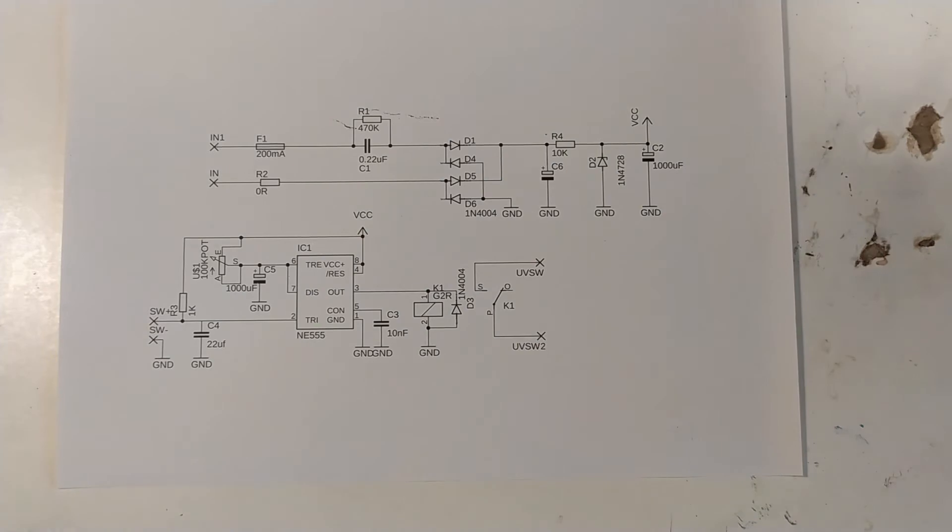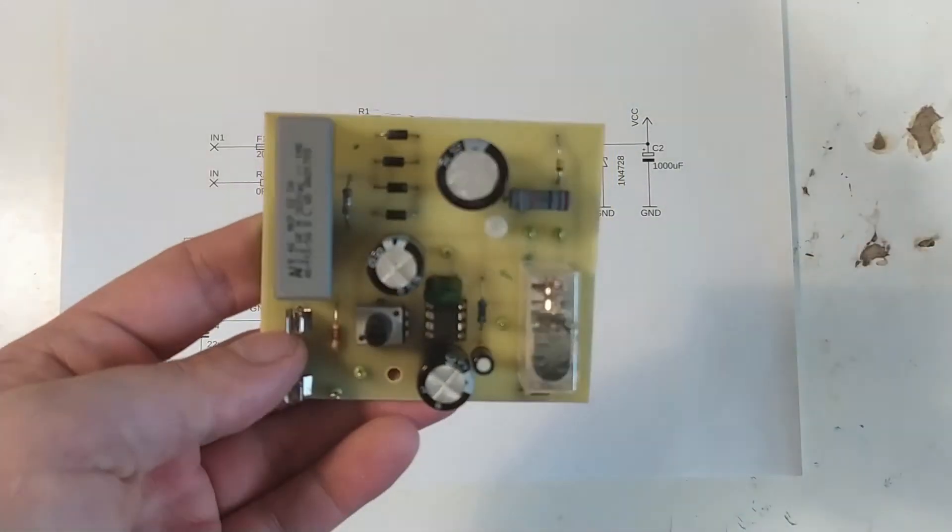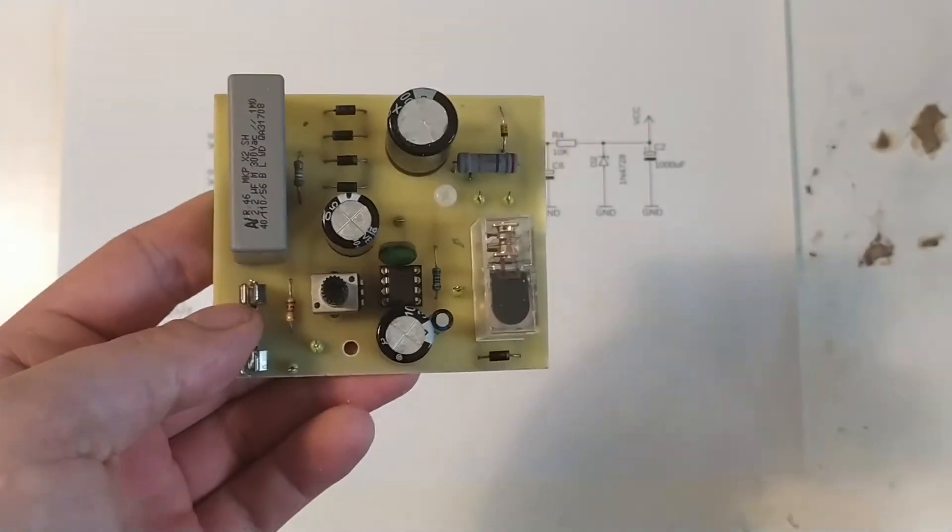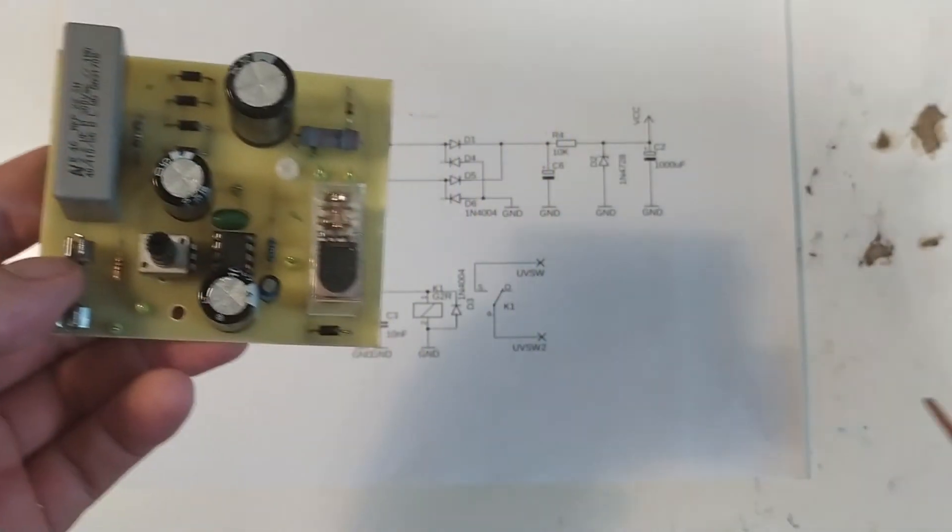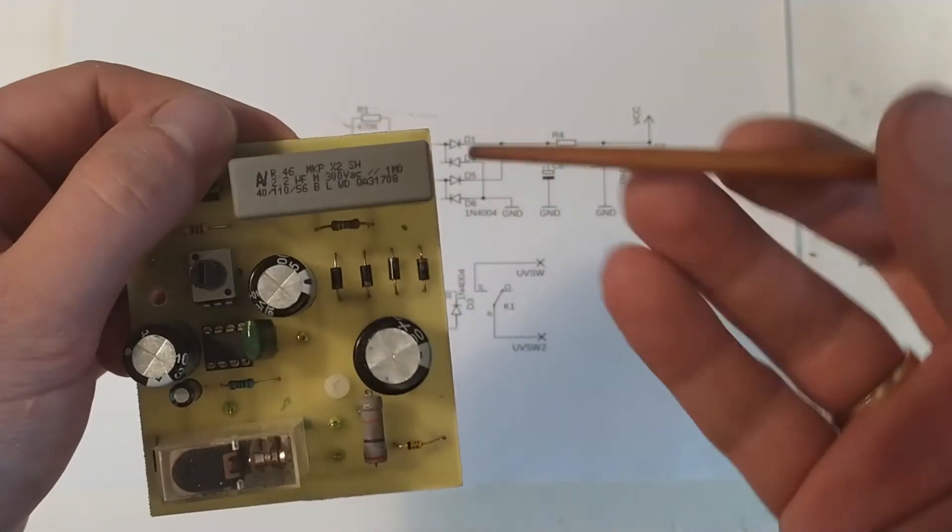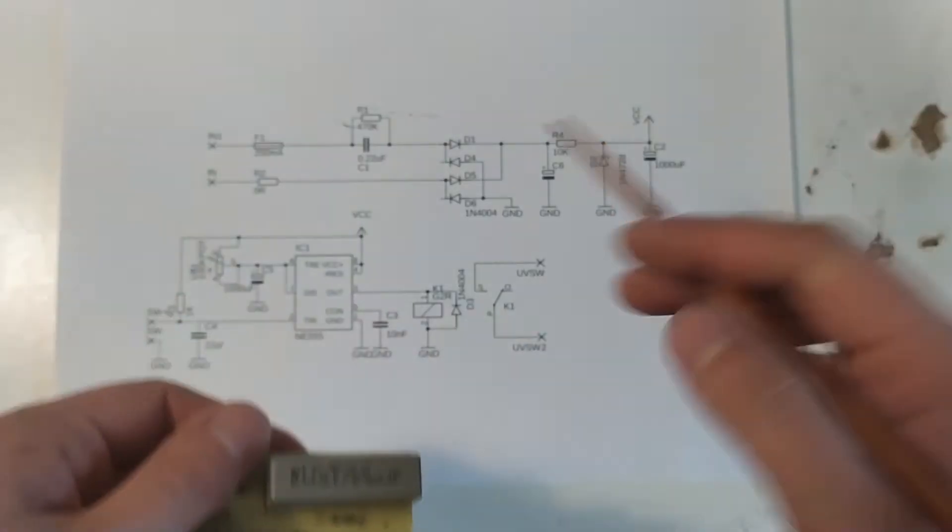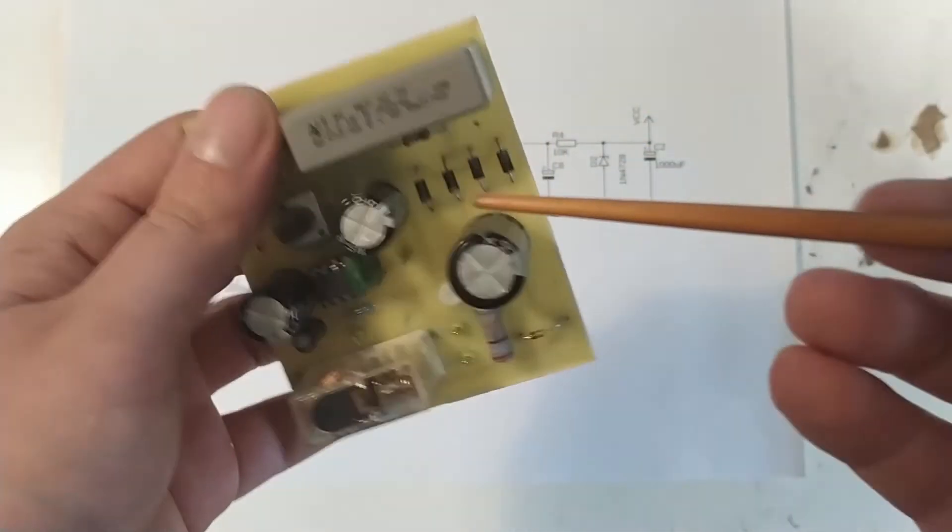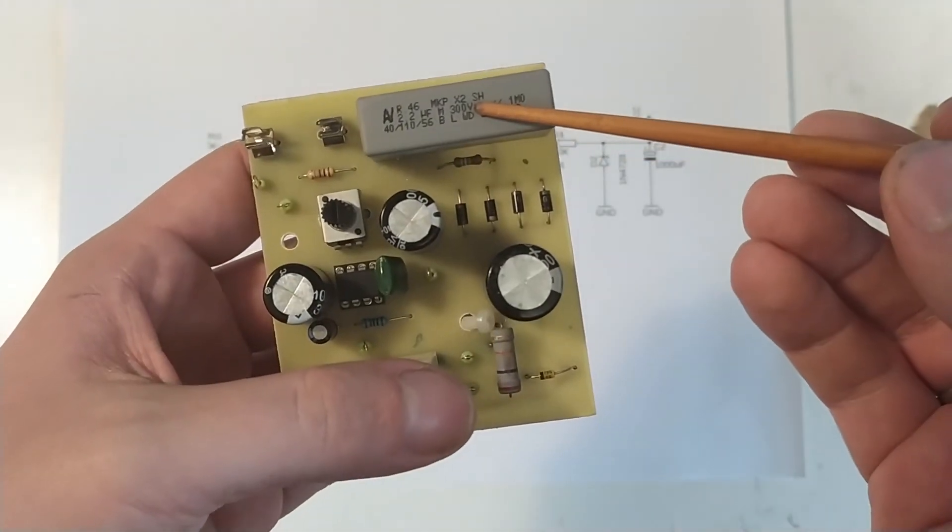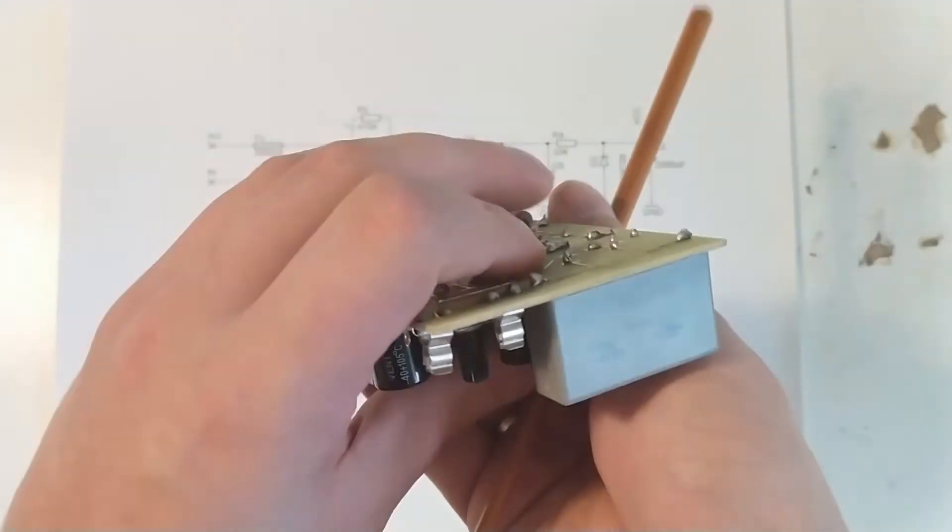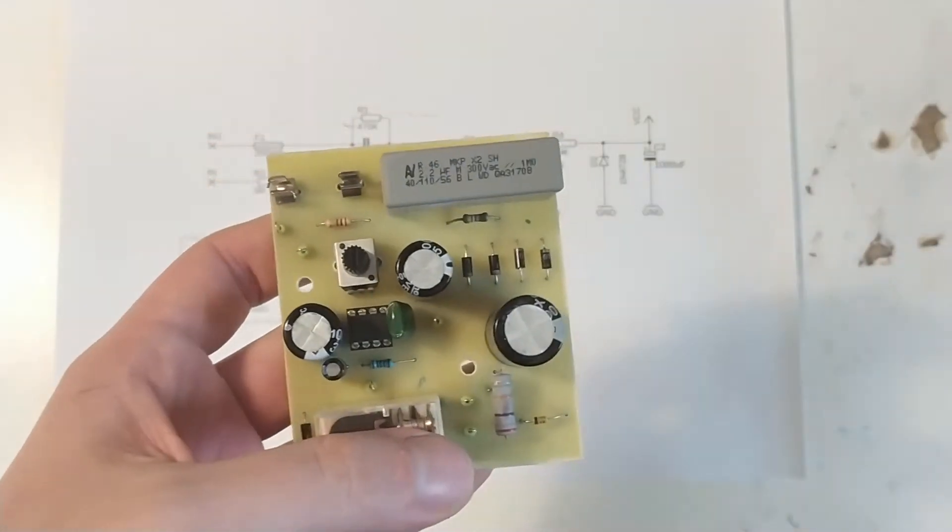So let's look at the circuit board for this. It's also relatively easy. We see our, oh, there's an error on the schematic. This is a 2.2, not a 0.22. It's a relatively large capacitor.